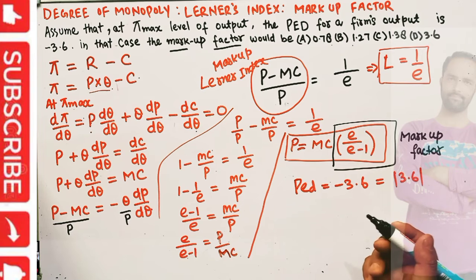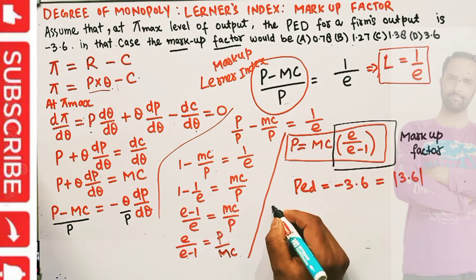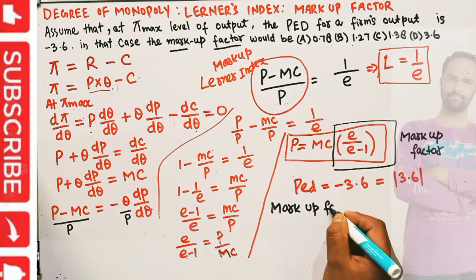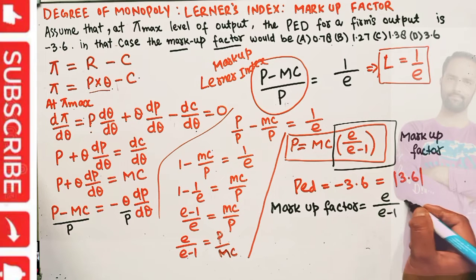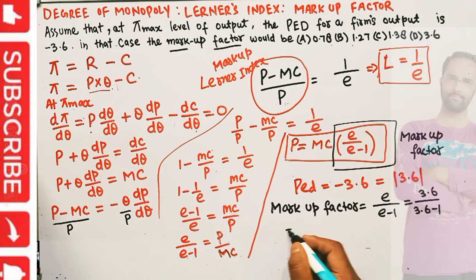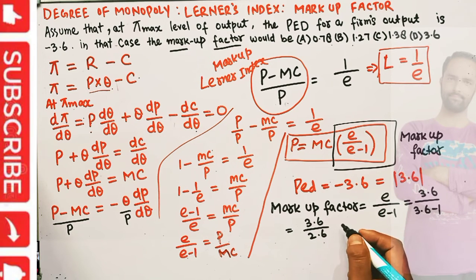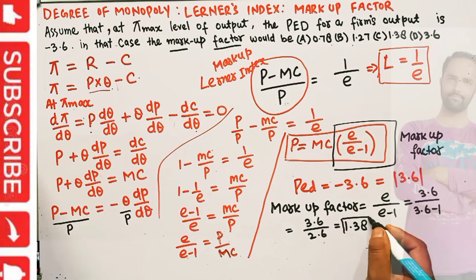Calculating the markup factor: e/(e-1) = 3.6/(3.6-1) = 3.6/2.6 ≈ 1.38. So the markup factor is 1.38, which corresponds to option C.